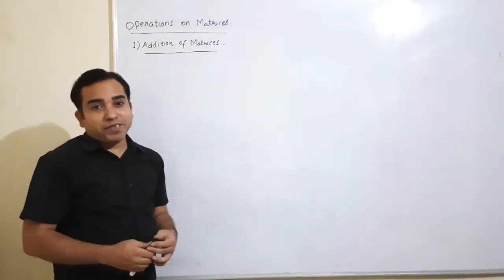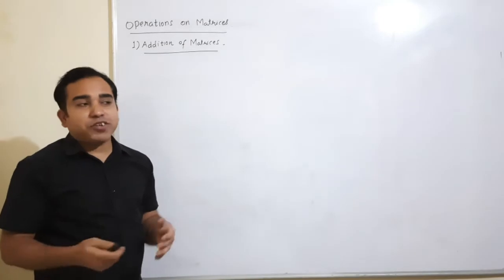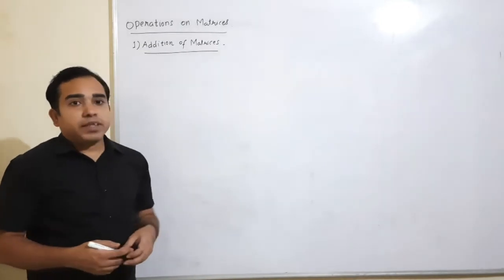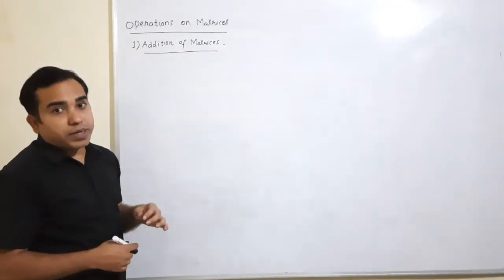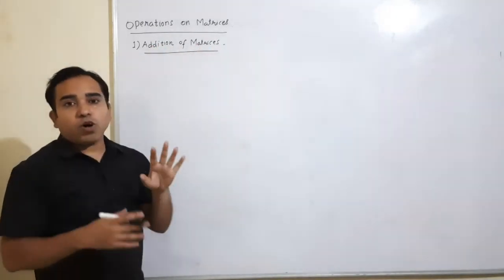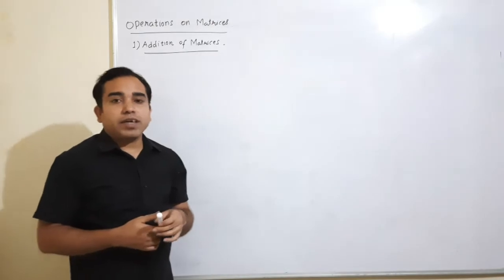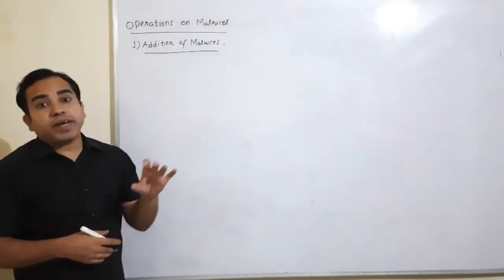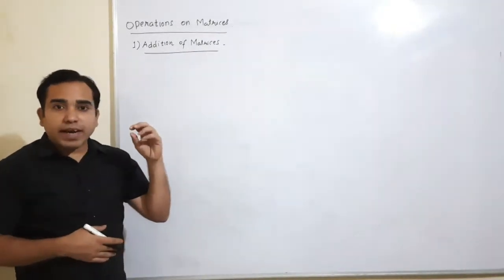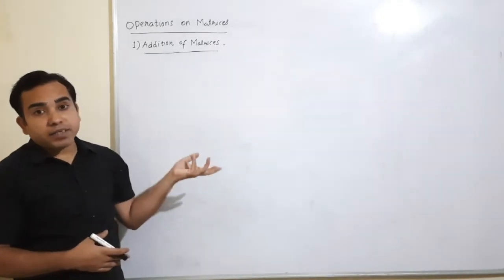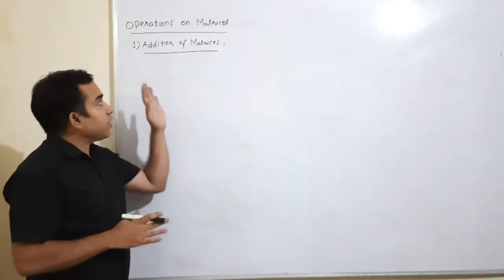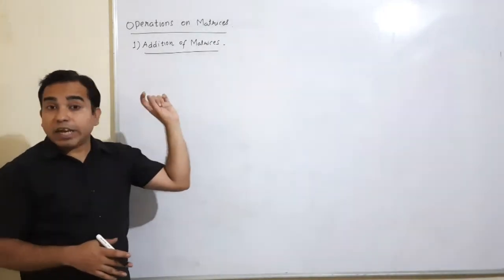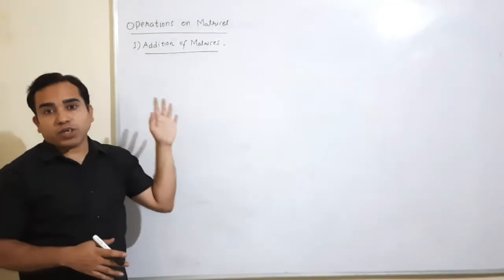Hello everyone, my name is Vijay. In the first video we have seen what is the matrix and what are types of matrices and the way of writing and denoting it. Now there are certain more things on matrices. The next topic is operations on matrices — like with numbers we have addition, multiplication, division, subtraction, etc. We are going to understand three operations on matrices: addition, scalar multiplication, and product of matrices.